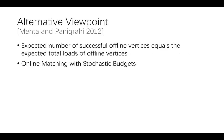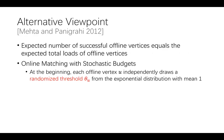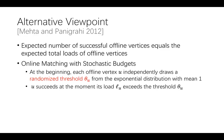Secondly, the stochastic rewards model can be reduced to the stochastic budgets model when P tends to 0. In the stochastic budgets model, at the beginning, each offline vertex U independently draws a random threshold C_U from the exponential distribution with mean 1. Then U succeeds at the moment its load exceeds the threshold. Note that the threshold is not realized until the load exceeds it.